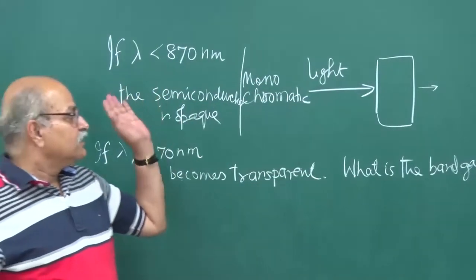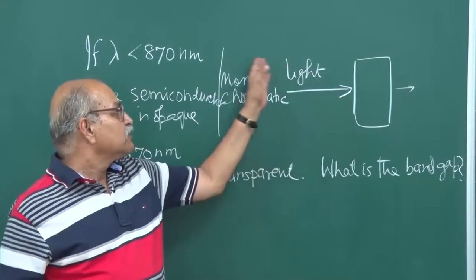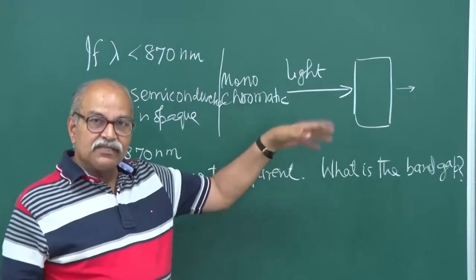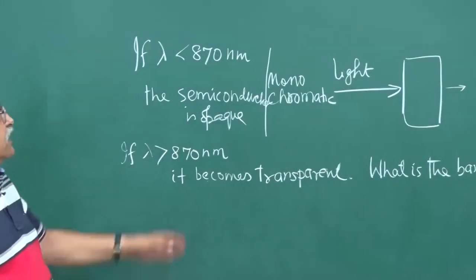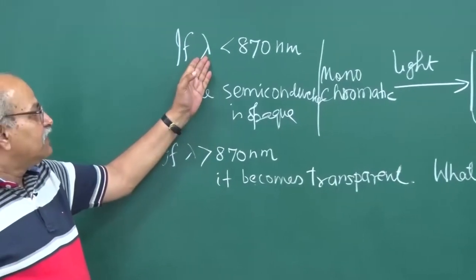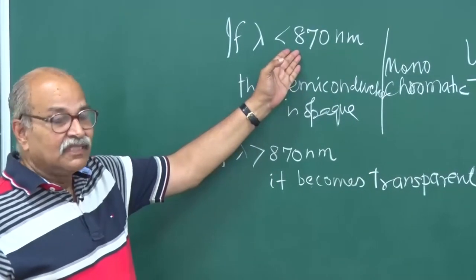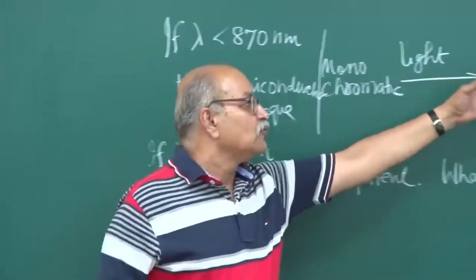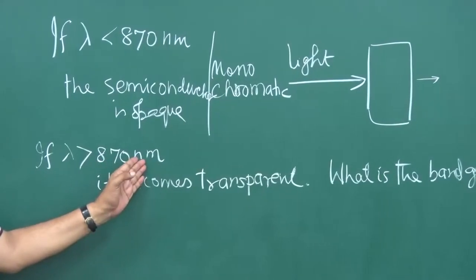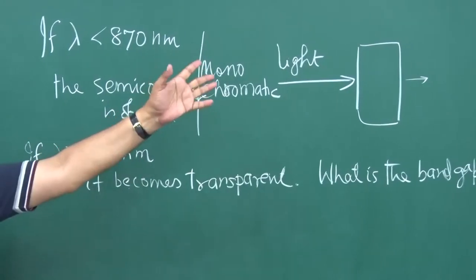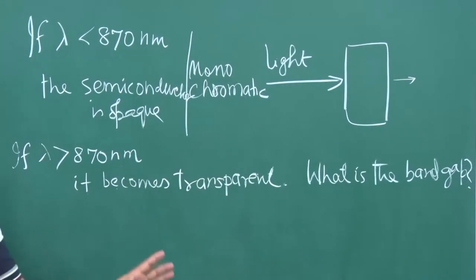You have a semiconductor and you allow monochromatic light to fall on it. You change your light source and work with different wavelengths. You find that if wavelength is less than 870 nanometers, there is a lot of absorption — it's opaque, the light is not coming out. But when lambda is more than 870 nanometers, a lot of light comes out, the absorption is very small, and it looks as if it is transparent. So, what is the band gap?